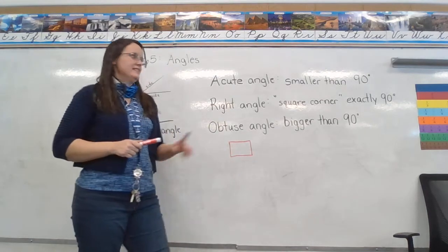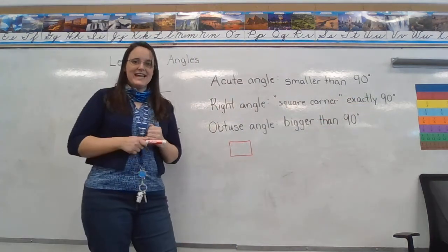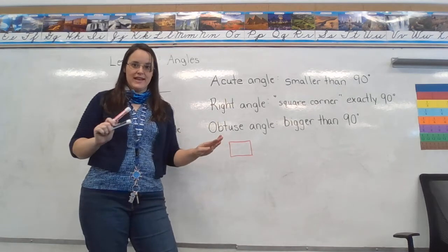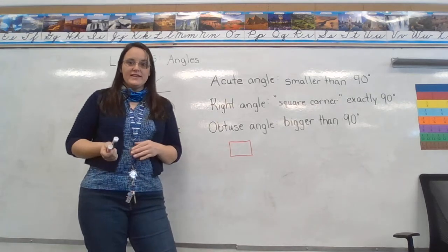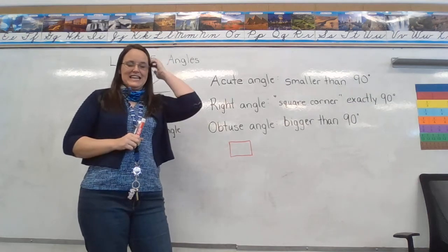So they're called right angles. They have a measurement of 90 degrees, exactly 90 degrees. No less, no more. So an 89 degree angle is not a right angle and a 91 degree angle is not a right angle. It's exactly 90 degrees.